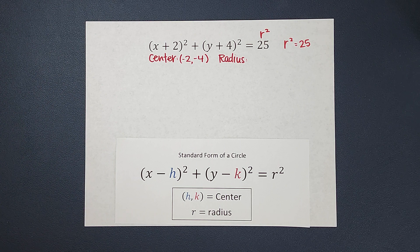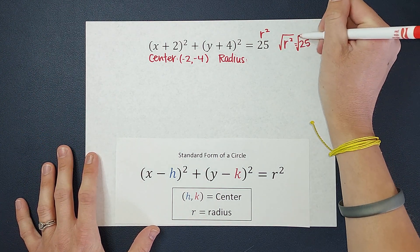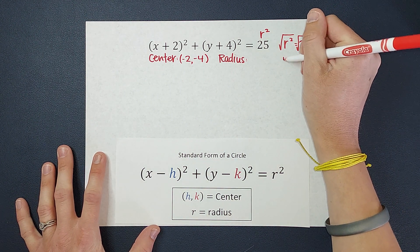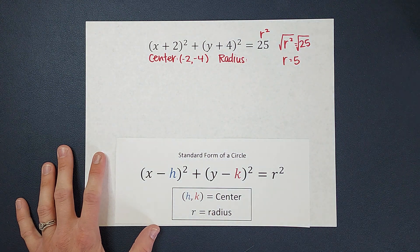But I want to know what just the radius is. So to get rid of that squared, I take the square root of both sides, right? Which leaves me with the square root of 25 is 5, right?